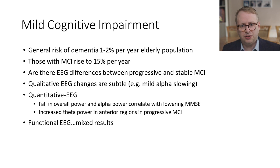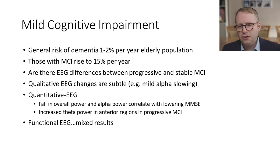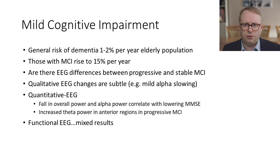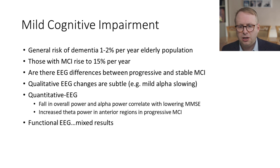Let's move on now from aging to the situation of mild cognitive impairment. We know that the general risk of dementia in the elderly population is about 1% to 2% per year. But once people have become established with mild cognitive impairment, that jumps up to about 15% a year. The question then becomes: are there EEG differences between progressive and stable MCI, which may be very helpful as a biomarker in terms of predicting what may happen? If we look at qualitative EEG changes, these are only really subtle - some mild alpha slowing - and it's only particularly helpful if you have serial EEGs. If we move on to quantitative EEG, we tend to find an overall reduction in power of all frequencies, particularly for alpha, and an increase in theta power, particularly in the anterior regions.